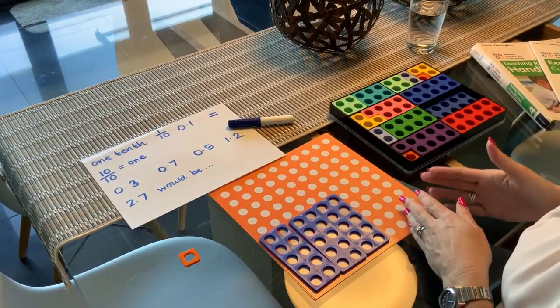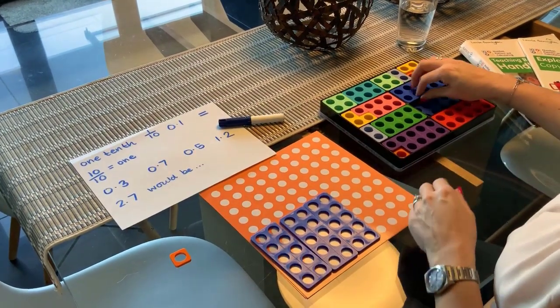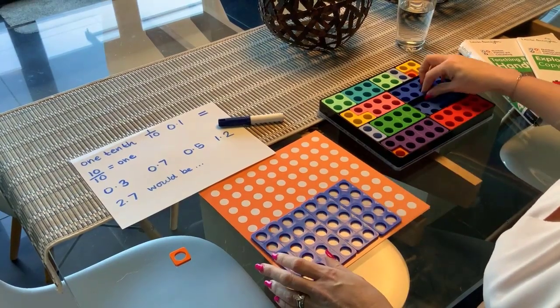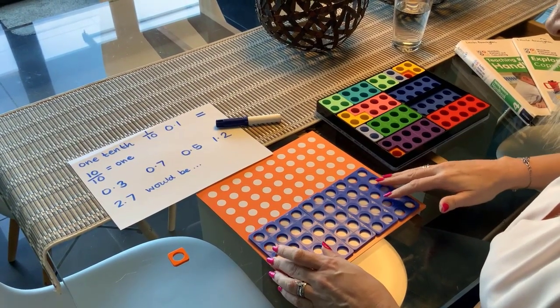Zero point seven would obviously be seven of those. Zero point five, we're filling in a half. Something like this, so a half covered and a half not.